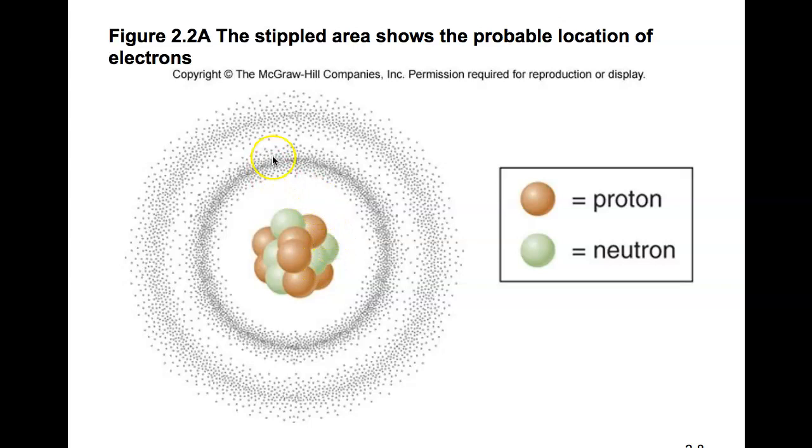Surrounding this, because it's an electron cloud model, you have the possible areas of where electrons can be located. Remember that electrons have a negative charge, so ultimately, they're going to be attracted to the nucleus, which is positively charged, because opposite charges attract.